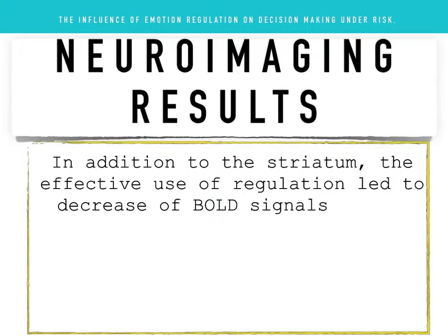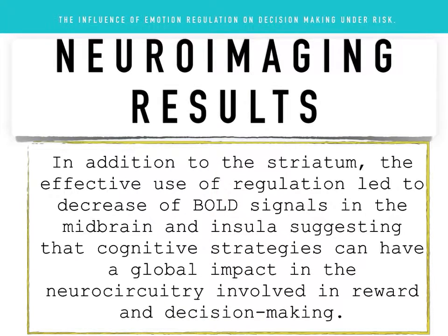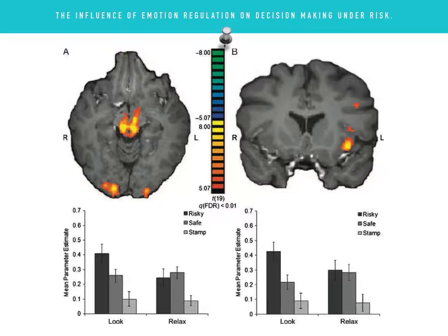In addition to the striatum, the effective use of regulation led to a decrease in BOLD signals in the midbrain and insular, suggesting that cognitive strategies can have a global impact on neurocircuitry involved in reward and decision-making. The effect of instruction and choice in the midbrain and the insular: the left midbrain BOLD responses demonstrated an interaction of instruction and choice such that activity in risky choices was significantly reduced after relaxed regulation compared with the natural look condition. A main effect of choice was also observed in the left anterior insular, with greater responses to risky compared to safe choices.